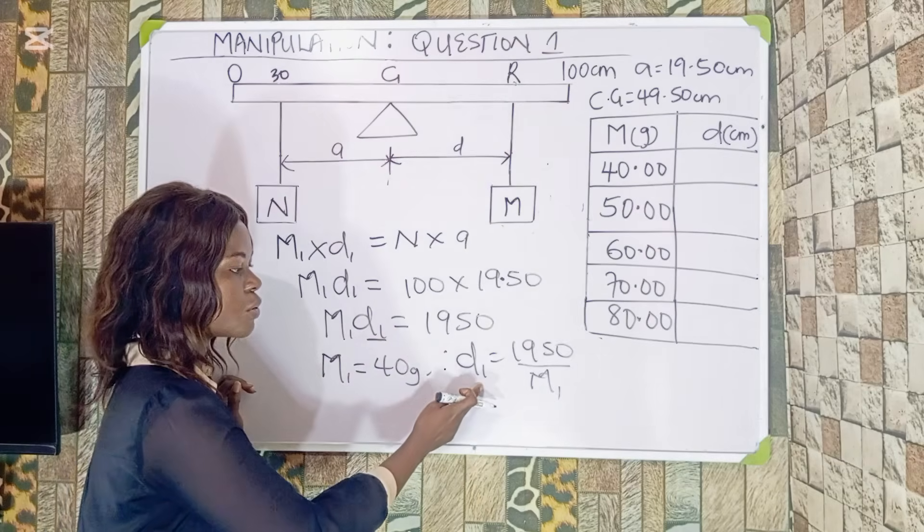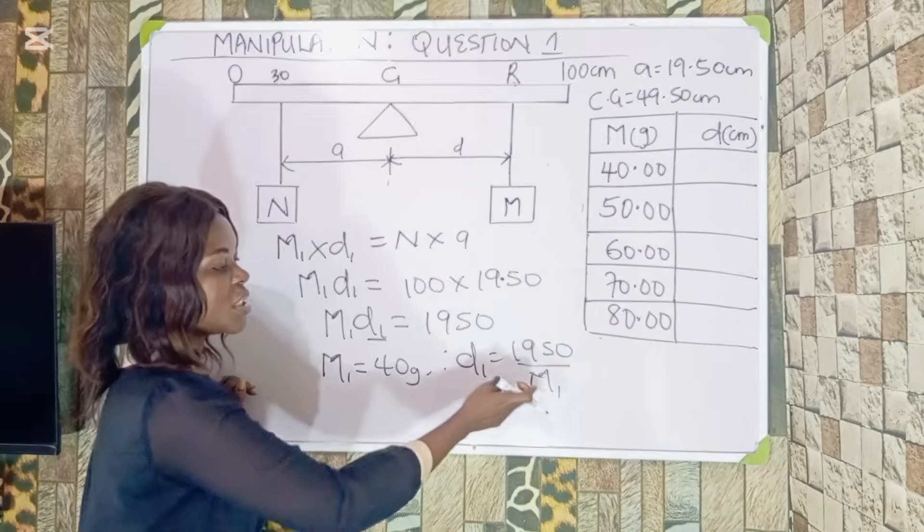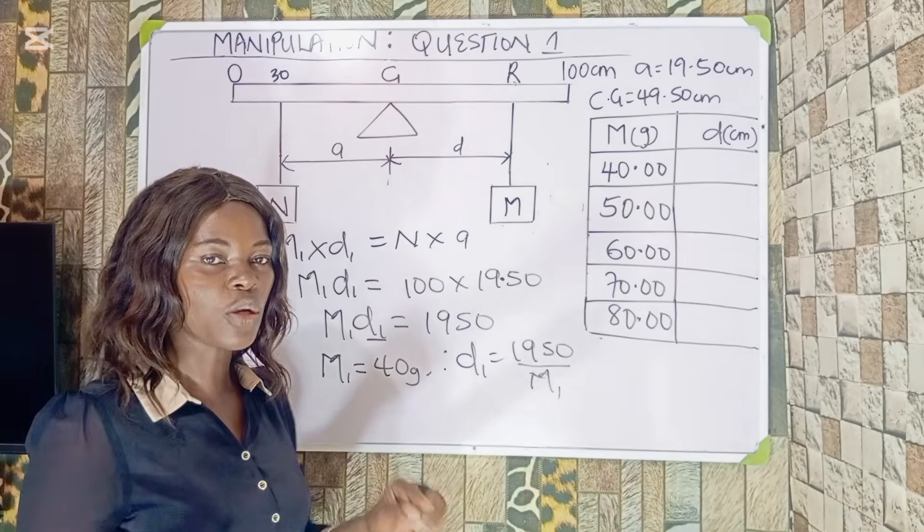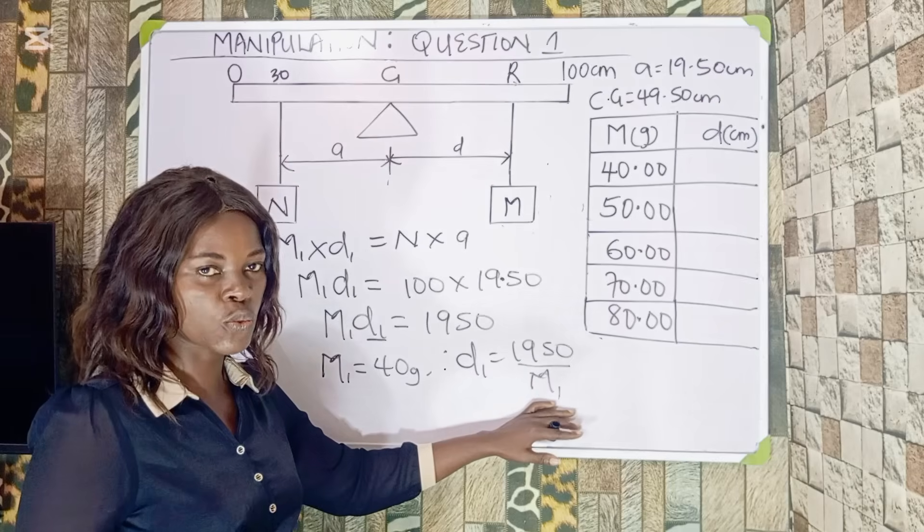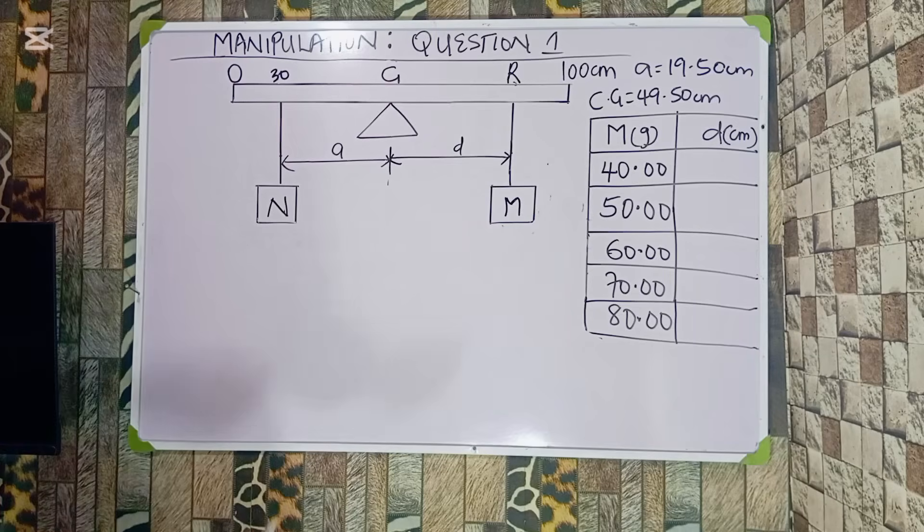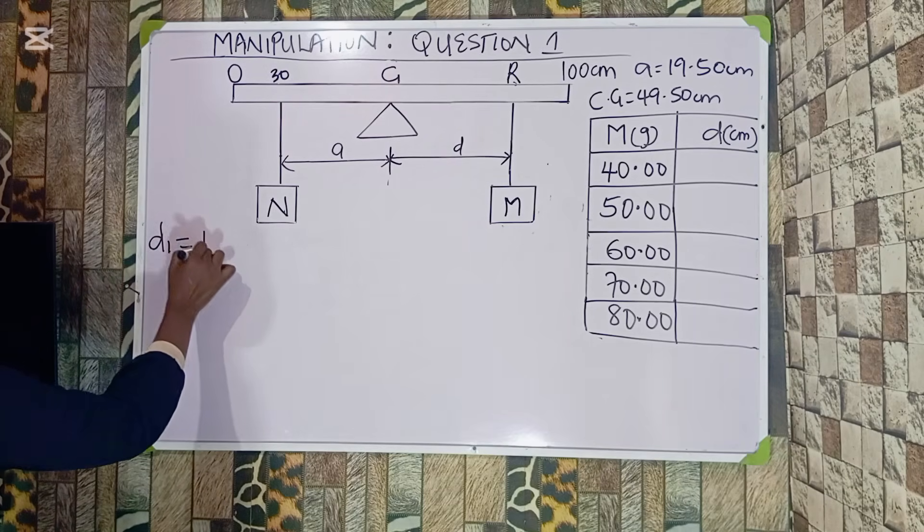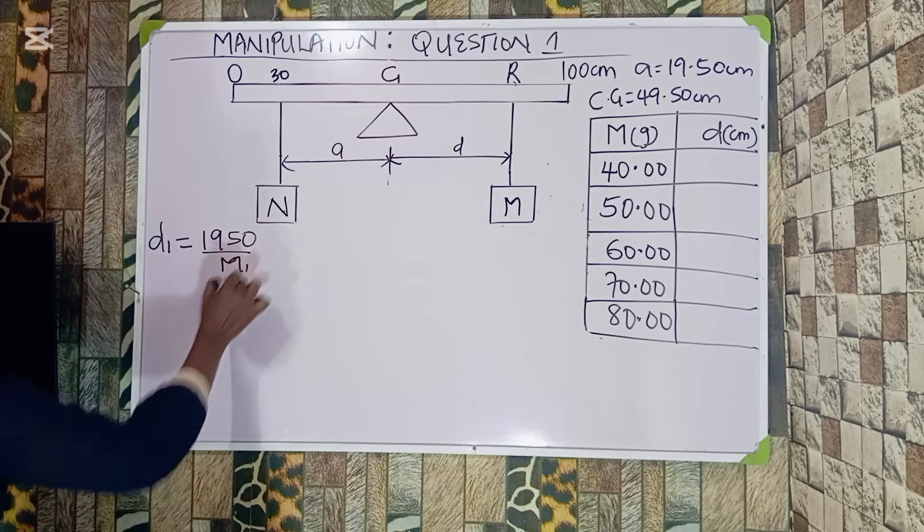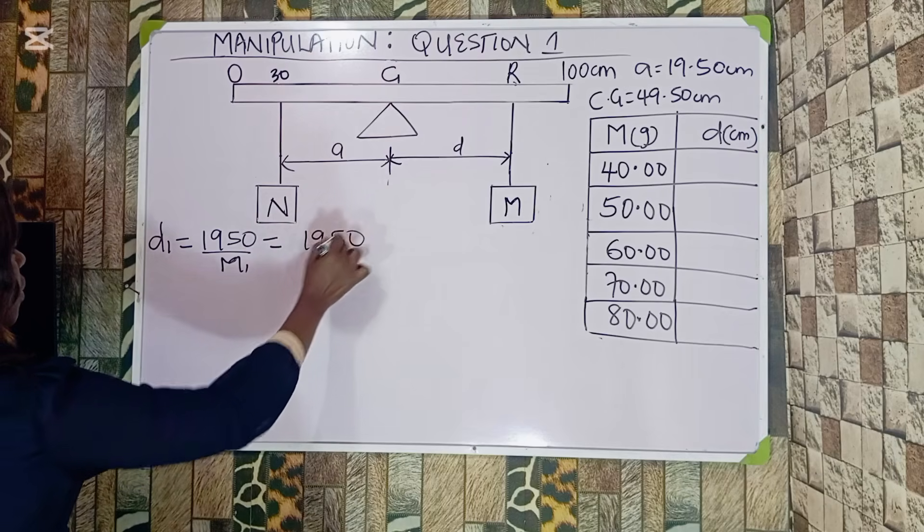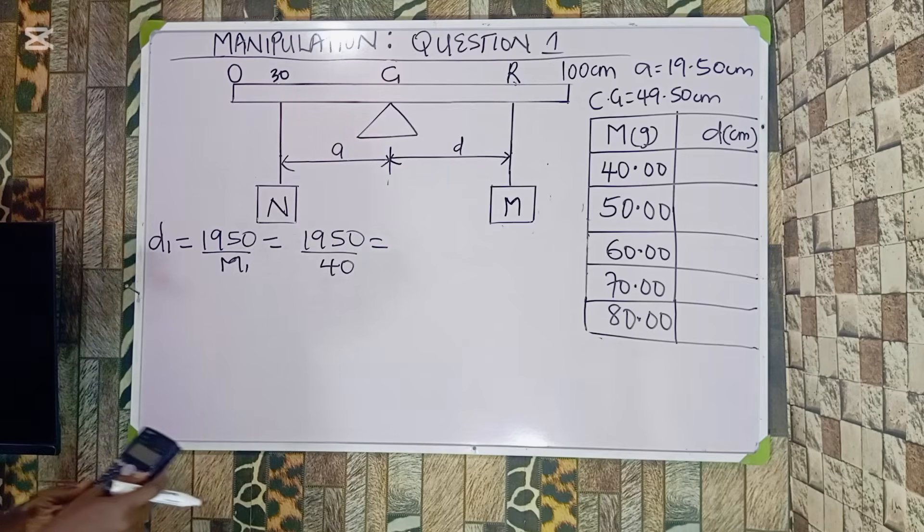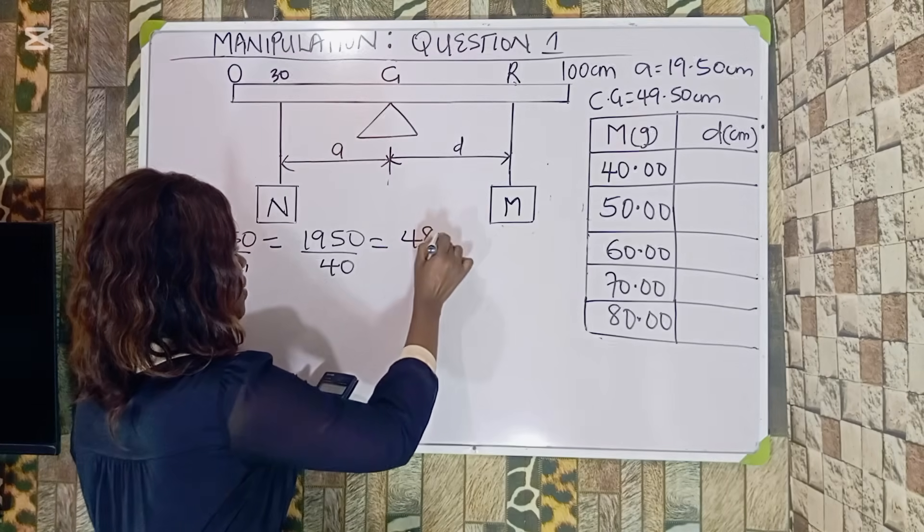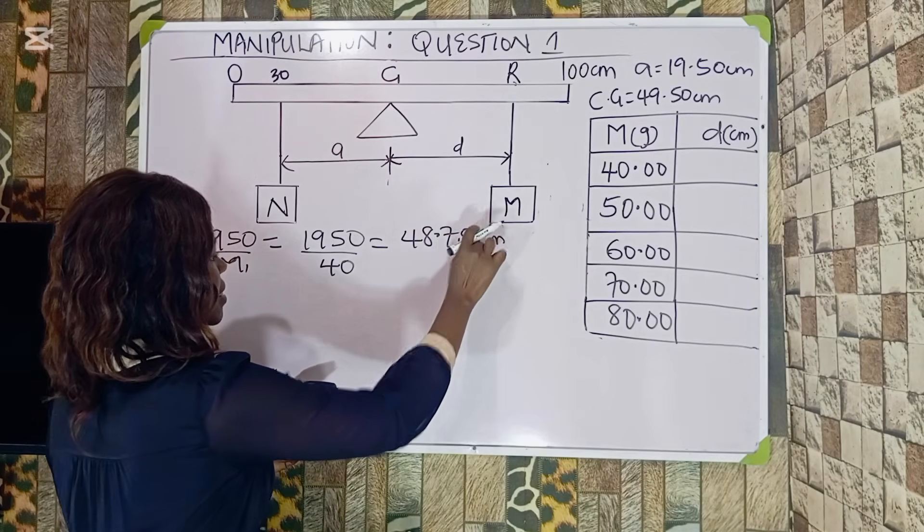I want to make d the subject by putting the values of M. When M equals 40 gram, we're going to find the value of D. D1 equals 1950 over M1. Knowing that my M1 is going to be 40 gram, I am going to be using this formula by varying the values of the masses to get the different values of d. When M is 40, D1 equals 1950 over 40. I am going to divide using your calculator: 1950 divided by 40 gives me 48.75 centimeters.